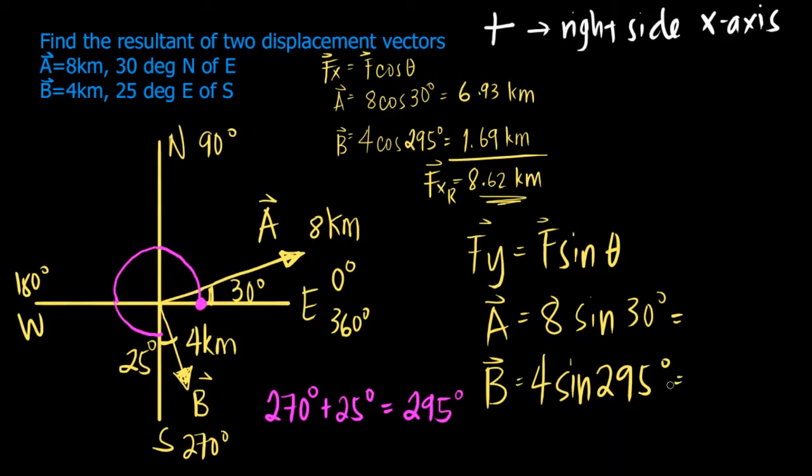Using our calculators, that's 8 sine 30 which is equal to 4, and then 4 sine 295 that is equal to negative 3.63 kilometers.